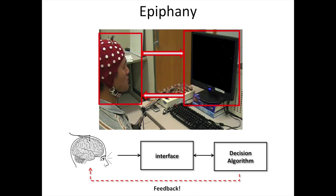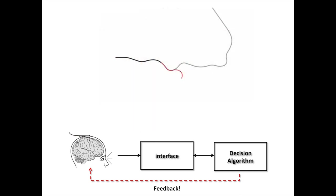The human takes a command or imagines a command, the machine processes it, updates something, and gives you feedback — from which the process sequentially moves forward. Everyone was focused on just the decoding step. But what about the engineering of the feedback? That led to an epiphany of using something analogous to 20 questions: if you have a number in your head between 1 and 20, I ask you binary questions and home in on it as rapidly as possible.